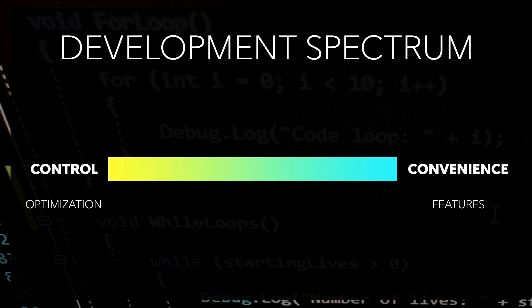On the other side is convenience — a combination of human readability, access to useful features, and reduction of maintenance and bookkeeping on the developer's part. For programming languages, we can look at machine code, literally ones and zeros, as the epitome of control, followed by assembly language, then C, which uses variables and functions but requires manual memory allocation. And then C-sharp, which automates a lot of memory bookkeeping for us. On the farthest end would be something like Scratch, or other beginner programming tools that add rendering overheads in the interest of accessibility.